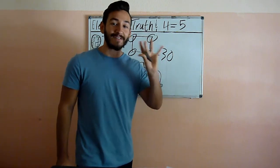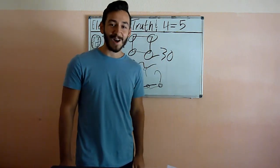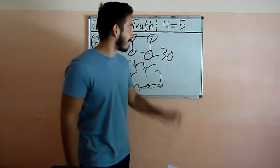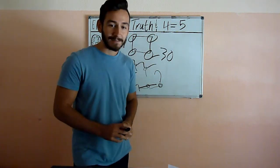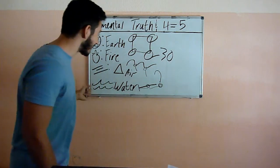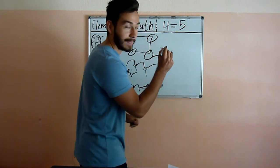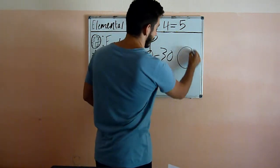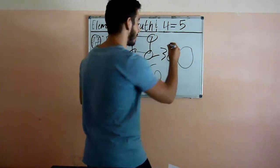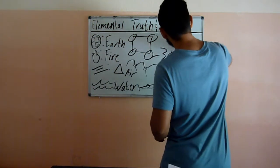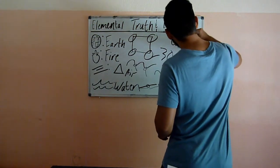And finally, we have the fifth element of truth. Four equals five because all four of these together, earth, fire, air, and water, create the fifth element, which is the quintessential element of change.